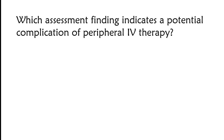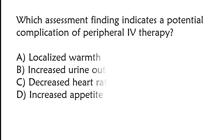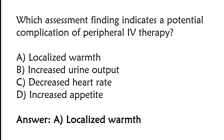Which assessment finding indicates a potential complication of peripheral IV therapy? Options: localized warmth, increased urine output, decreased heart rate, or increased appetite. The correct answer is option A: localized warmth.